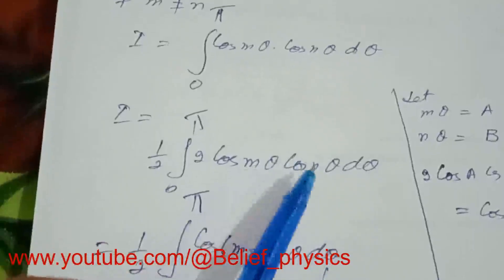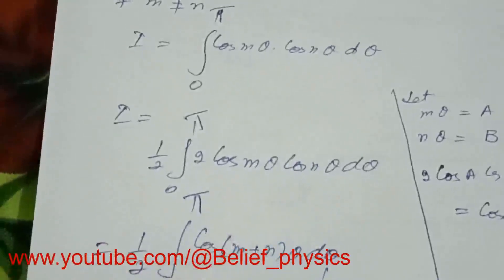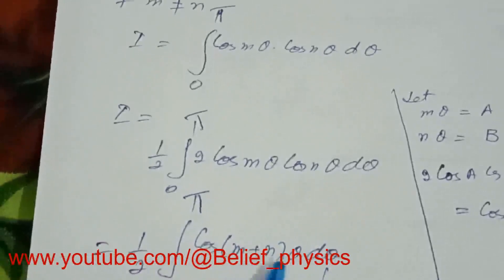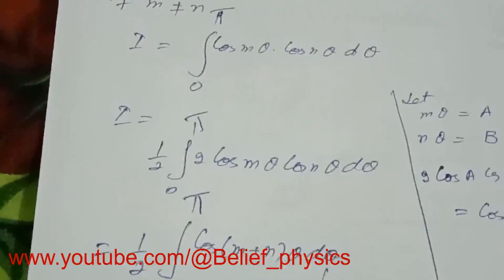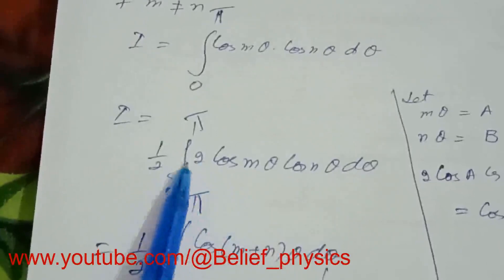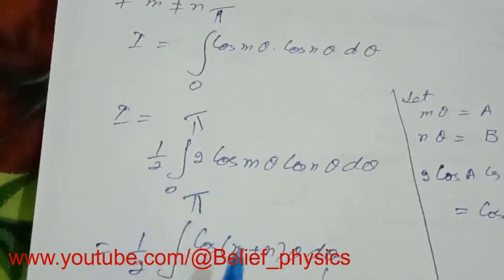Using the product-to-sum identity with a equals m theta and b equals n theta, this becomes one half times the integral of cos((m plus n) theta) plus cos((m minus n) theta) d theta.